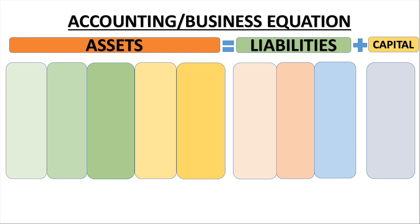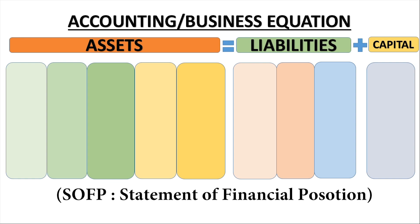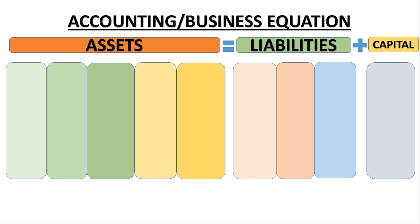This accounting equation actually leads to the Statement of Financial Position (SOFP), which contains only these three elements: assets, liabilities, and capital. If you understand the accounting equation, you can easily understand the SOFP and analyze the impact of any transaction on it.